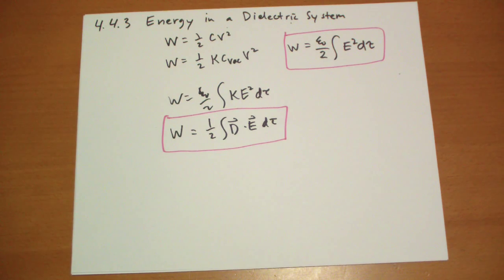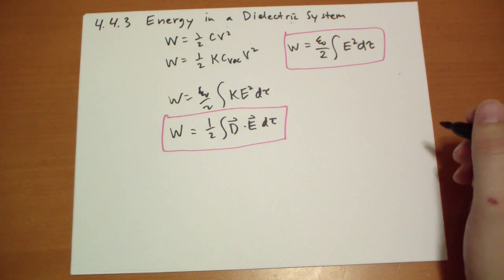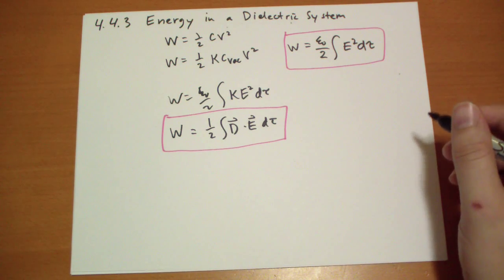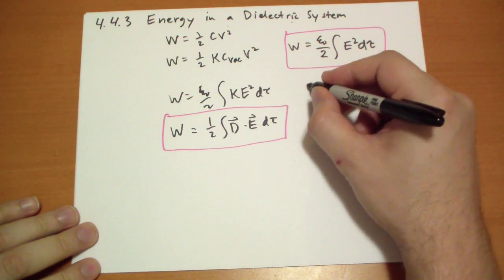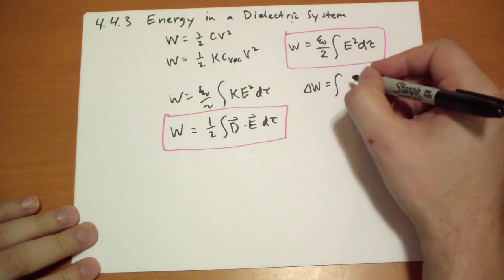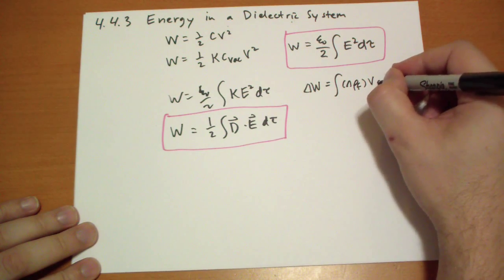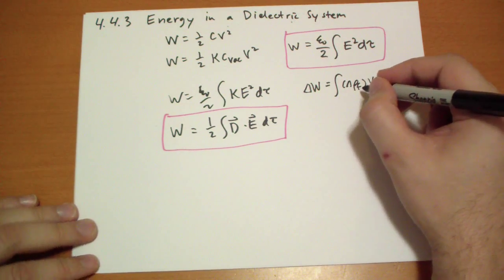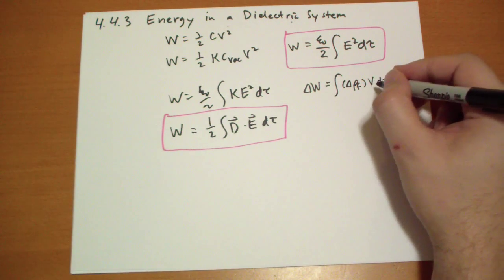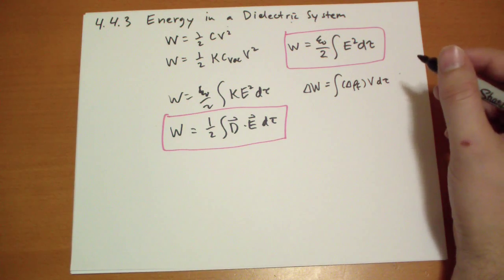So now we have this new equation to give us the amount of work it takes to charge up or to configure a system of dielectrics. This is the old one, no dielectrics, this is the new one, now that we have dielectrics with the stronger field. So, to prove this, it's not terribly difficult to prove this. It does involve product rule number 5, so hopefully you're not playing some drinking game with that.